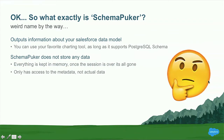So what is SchemaPuker? SchemaPuker simply outputs information about your Salesforce data model in the PostgreSQL schema format. SchemaPuker doesn't store any data — everything's kept in memory, so once you've finished your session, it's all gone. SchemaPuker only has access to the metadata API, so it can't read your actual records. Once you've got your PostgreSQL schema from SchemaPuker, you can then go ahead and import that into tools like Lucidchart — which is my preferred tool — or things like Visio or ERWIN.